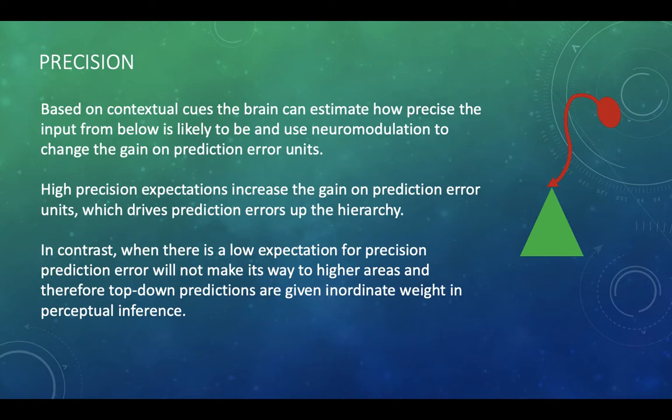In contrast, when there's low expectation for precision, the prediction error will not make its way to higher areas. And the consequence of this means that there's then a reliance and the top-down predictions are given a huge weight in perceptual inference.